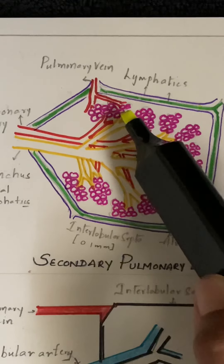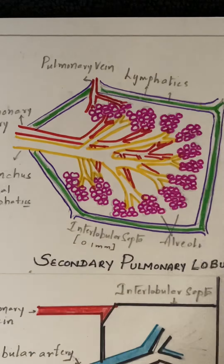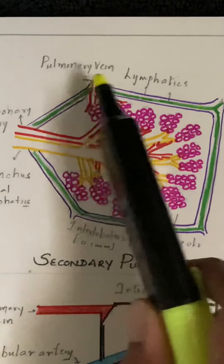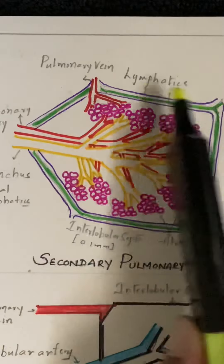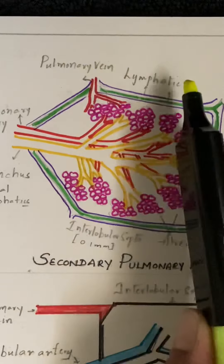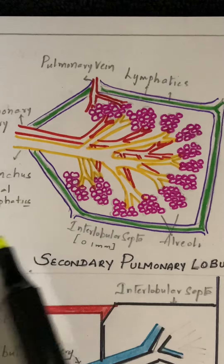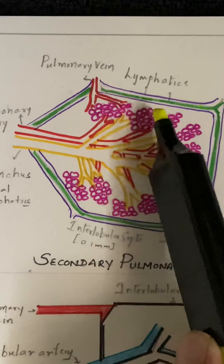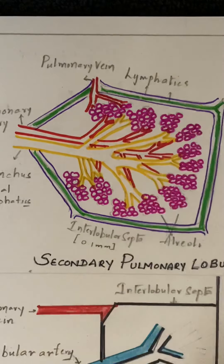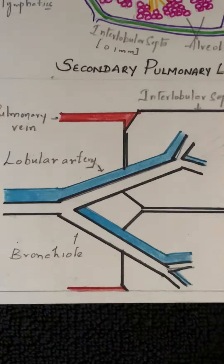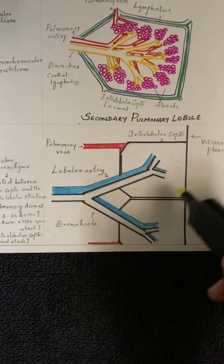There are about 3 to 30 acinae per lobule, and one acinus contains 1500 to 4000 alveoli. Surrounding the acinae we have interlobular septa. So to summarize: septal structures contain pulmonary vein and lymphatics; centrilobular structures contain pulmonary artery, bronchiole, and central lymphatics; lobular parenchyma contains pulmonary acini with alveoli surrounded by interlobular septa.